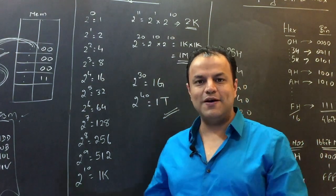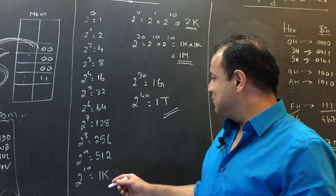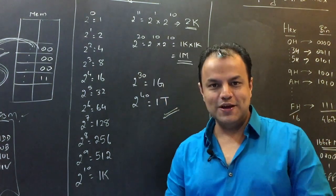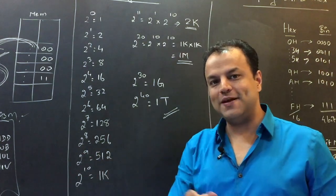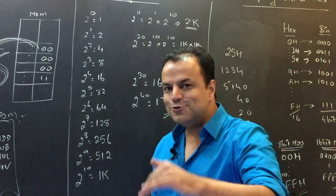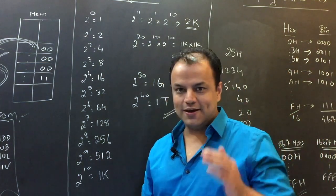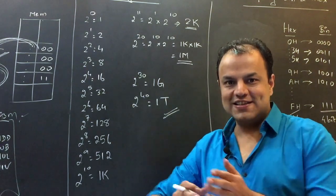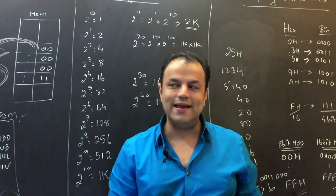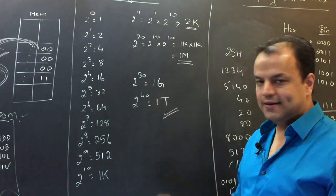Two raised to 39, 512 GB. Two raised to 40. Two raised to 40 is two raised to 10 multiplied by two raised to 30. Two raised to 10 is a kilo. I told you, every time you hit a kilo, you go to the next level. So it's a kilo multiplied by a giga becomes a tera. So two raised to 40 is a tera.